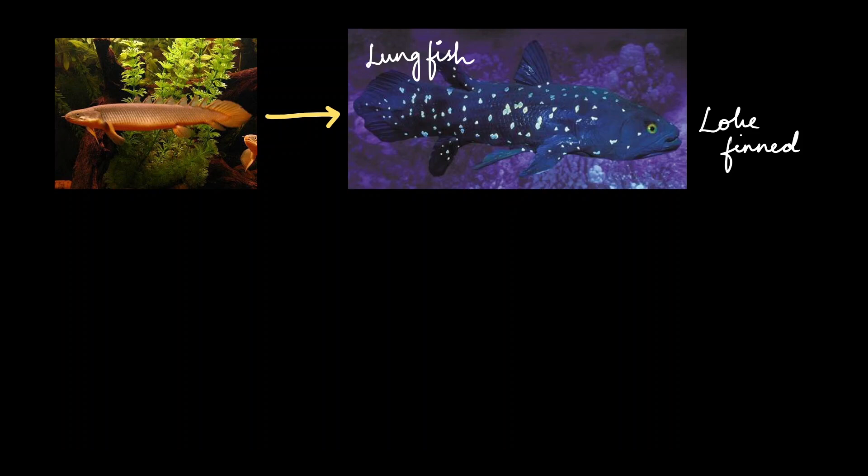Lungfishes are predators in shallow waters. And when the water levels go down, they can burrow themselves in the mud and remain alive but inactive because they are breathing the atmospheric air. It is believed that these lungfishes somehow adapted themselves to live consuming the vegetation on the land.